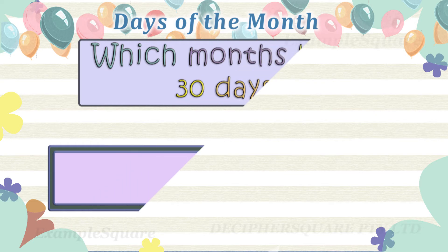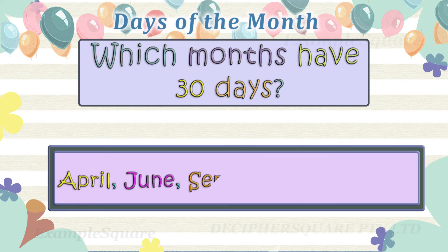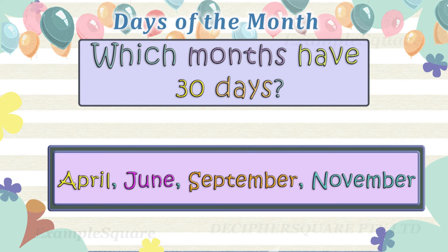Which months have 30 days? April, June, September, and November have 30 days.